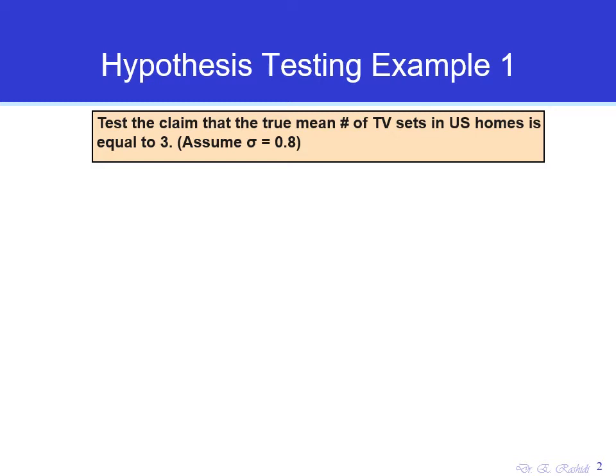We're going to go through every step for testing a hypothesis. The first step is to state the two confronting hypotheses — the null and alternative hypotheses. The null hypothesis states the current situation or existing condition: the average number of TV sets in US homes is 3. So the parameter here is mu, and that's equal to 3.